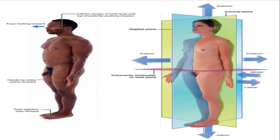Let's make a revision of the anatomical position, planes, and terms of location and orientation. The anatomical position: face looking forward, upright position, feet together, hands by side, inferior margin of the orbit level with the opening of the ear. The coronal plane, shown in blue, divides the body into anterior and posterior parts. The sagittal plane, in yellow, divides the body into right and left parts. The transverse or horizontal or axial plane divides the body into superior and inferior parts.